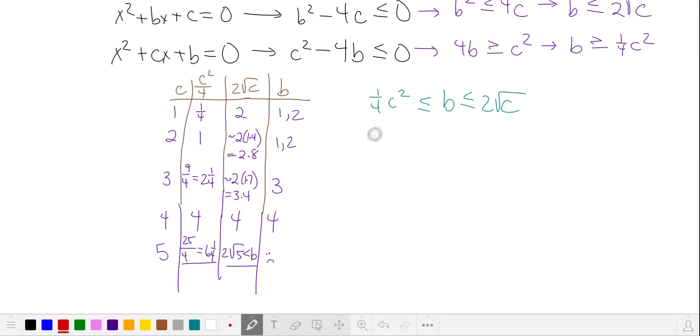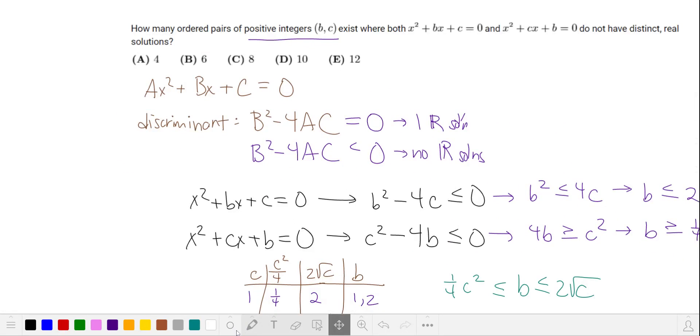Let's count our ordered pairs. We have (1,1), (2,1), (1,2), (2,2), (3,3), and (4,4). That's 1, 2, 3, 4, 5, 6 ordered pairs. And that's the answer.